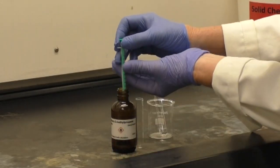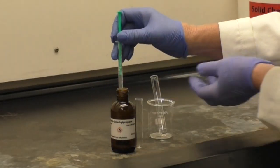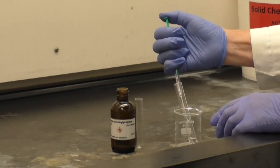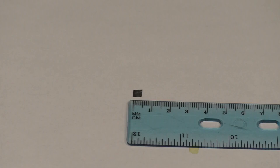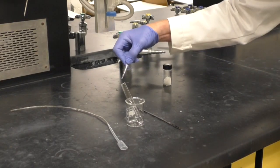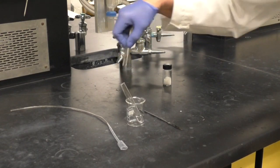Then add 0.35 milliliters of tert-butyl chloride and swirl to mix. Your instructor will have cut aluminum foil into 3 by 3 millimeter squares. Add one of these to the test tube.